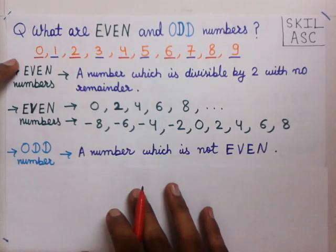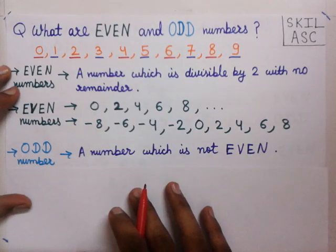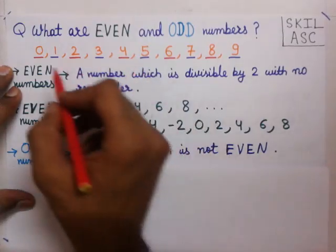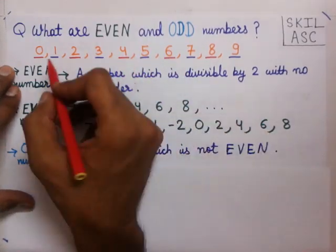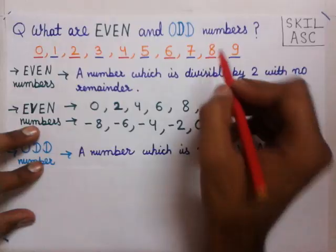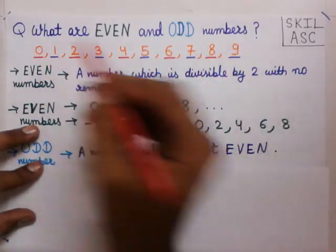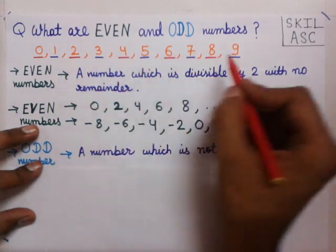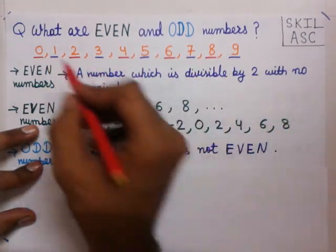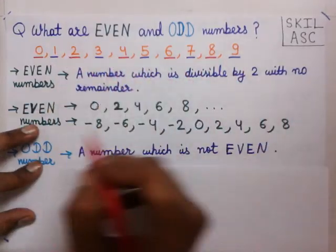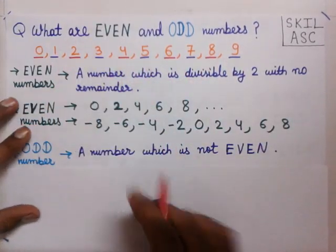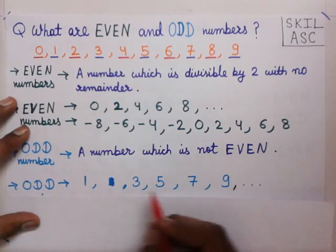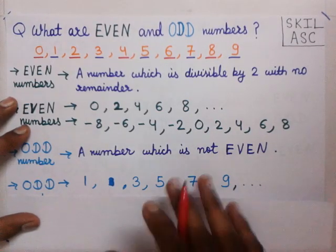Now we come to odd numbers. What are odd numbers? A number which is not even is an odd number. In our list, 0, 2, 4, 6, 8 are even numbers marked in red. The remaining numbers marked in blue are not even numbers, so they are odd numbers: 1, 3, 5, 7, 9. These are odd numbers.